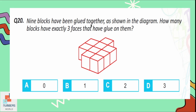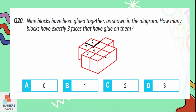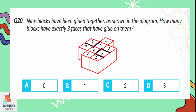Question number 20: nine blocks have been glued together as shown in the diagram. How many blocks have exactly three faces that have glue on them? Examining each block, two sides of some blocks are glued. Writing the number of glued sides for each block, only one block has exactly three faces glued. Option B is the correct option.